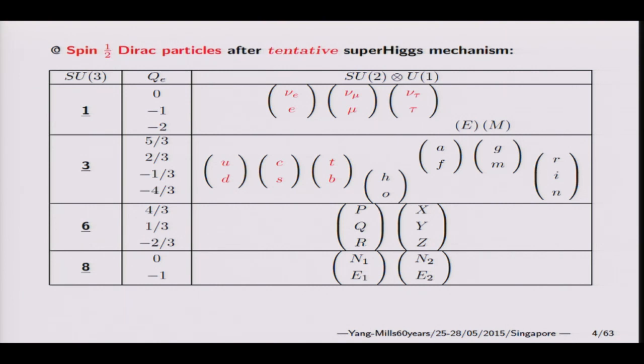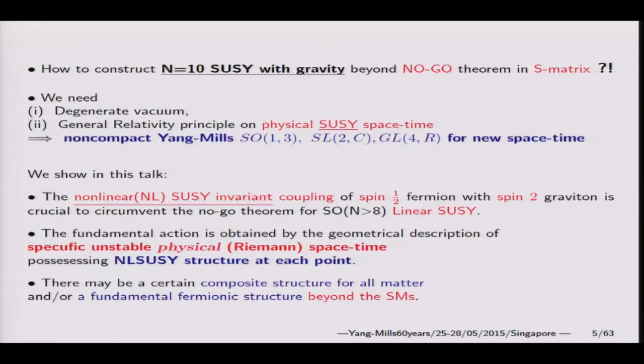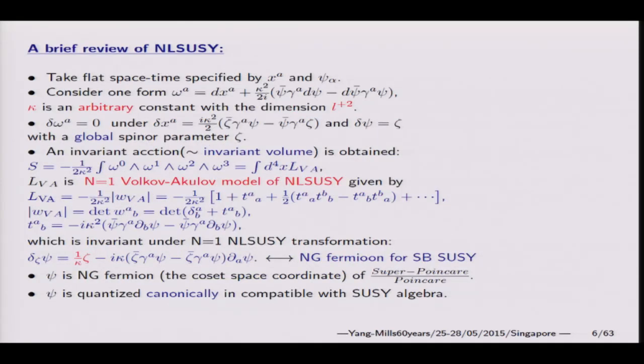This is the argument from S-matrix. How to circumvent the no-go theorem? I think taking the degenerate space-time is essential to circumvent the no-go theorem. What is the degenerate space-time? We take the degenerate vierbein, and it is given by non-linear representation of supersymmetry.